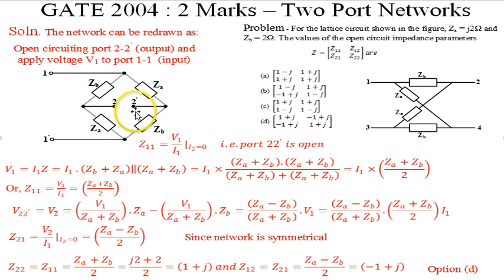Similarly, at 2-dash this would be V1 divided by (Z_A + Z_B) into Z_B, and they have to be subtracted. So there will be voltage V2 to 2-dash, and this is simplified (Z_A - Z_B) upon (Z_A + Z_B). We substitute for V1 here: (Z_A + Z_B) divided by 2. This (Z_A + Z_B) cancels out and we get here Z21 equal to V2 over I1 when I2 is 0. This comes to (Z_A - Z_B) divided by 2.